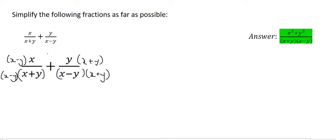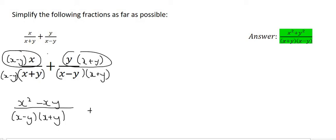Now we can multiply these two together. That's going to give us x² - xy over the common denominator, which is (x-y)(x+y). And then on the right-hand side, we can multiply these together. That's going to give us xy + y². And at the bottom, we're going to have (x-y)(x+y).